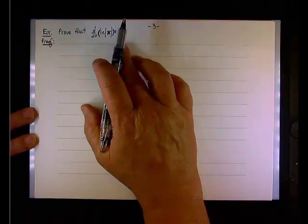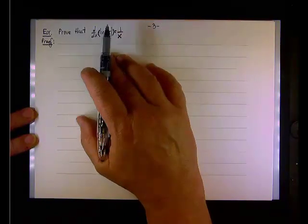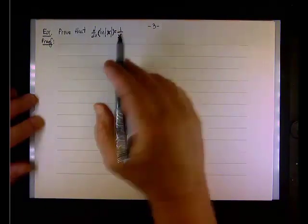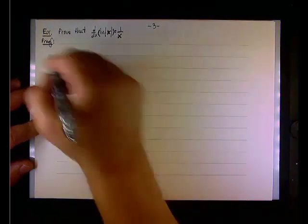But on the other hand, nobody guaranteed to us that the derivative of the natural log of the absolute value of x indeed is 1 over x, and that's the task here. So let's recall the following.